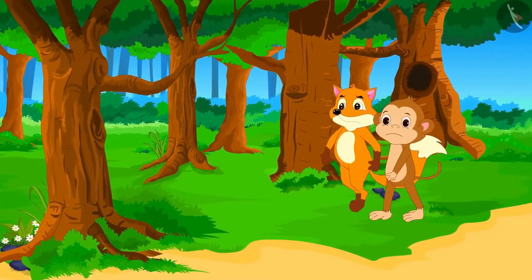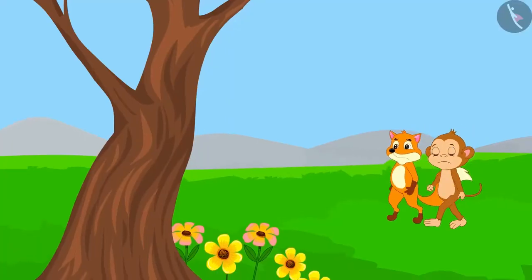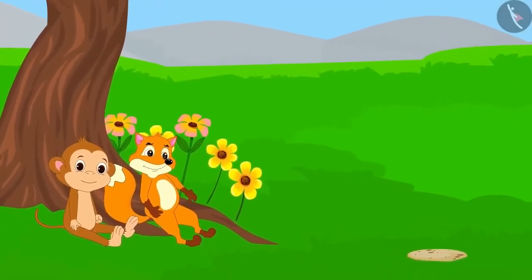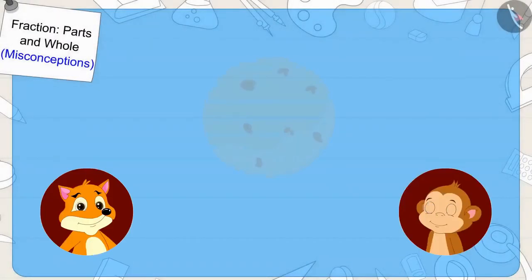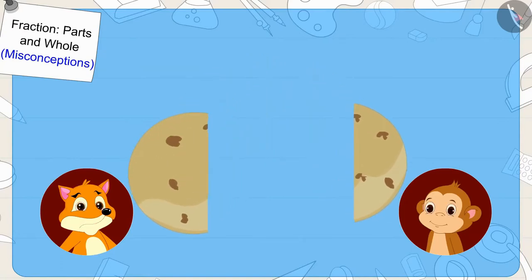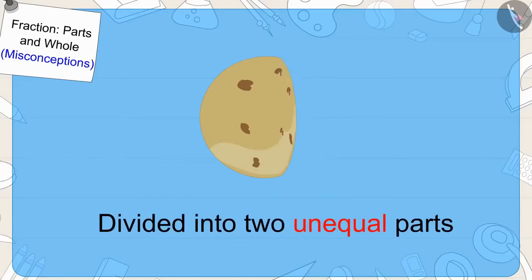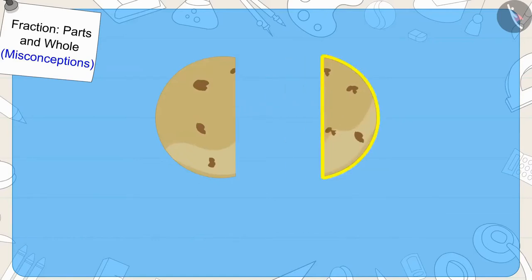One day, Babban and the fox got lost in the forest. They wandered a lot but could not find anything to eat. Both got tired and sat in the shade of a tree. Just then, they found a chapati there. Both became very happy. Now both decided to divide the chapati in two halves. The fox divided the chapati in two unequal parts and gave one part to Babban. Can you tell if the fox really gave Babban half of the chapati?